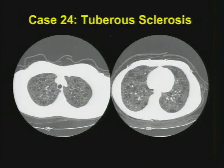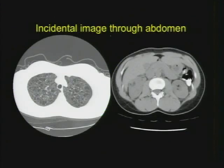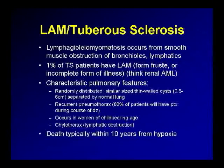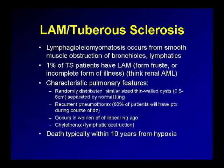Case number twenty-four: a young woman with diffuse cysts in the lung, some with clearly defined thin walls and sometimes mural nodules. Think about tuberous sclerosis — actually a very bad actor with poor prognosis. Occasionally you'll see accompanying images showing a fatty mass in the kidney or an angiomyolipoma. This is a patient with lymphangioleiomyomatosis — tuberous sclerosis. These are spectrums of the same disease. About 1% of patients with tuberous sclerosis will have LAM. Characteristic pulmonary features: randomly distributed, similar size, thin-walled cysts. Patients may present with spontaneous pneumothoraces or even chylothorax. Classically this affects women of childbearing age, with death typically within about 10 years from progressive hypoxia.